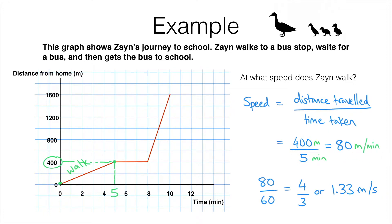Going back to the answer of 80 meters per minute — it's worth noting that this is exactly the gradient of the walking line on the graph. To find the gradient you divide the change in the vertical direction by the change in the horizontal direction, which is simply 400 divided by 5. It's a useful thing to know that the gradient on a distance-time graph gives you the speed.